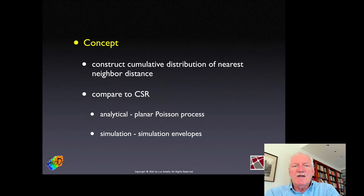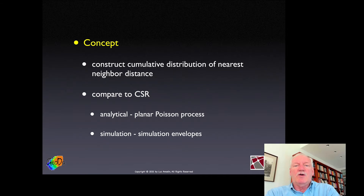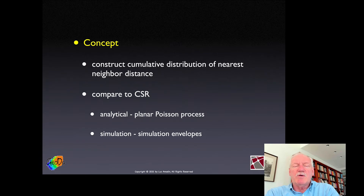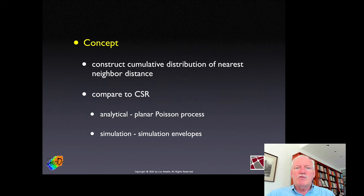The simulation envelope works by mimicking a point pattern under spatial randomness. With a fixed number of points, we give their x and y coordinates uniform random numbers, giving a replicate of what a point process looks like under complete spatial randomness. For each replication we construct the cumulative distribution of the nearest neighbor distance. We then take the maximum, minimum, or a relevant quantile — like the 95th or 5th percentile — to create a band around what the distribution would be under complete spatial randomness.